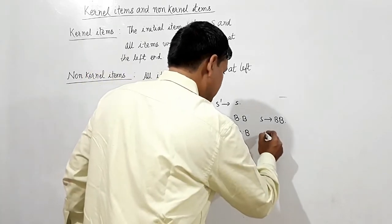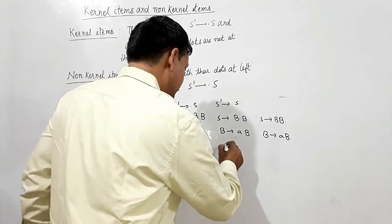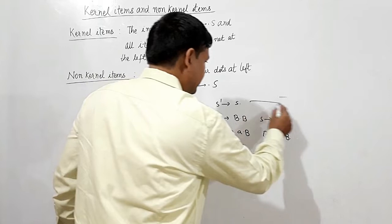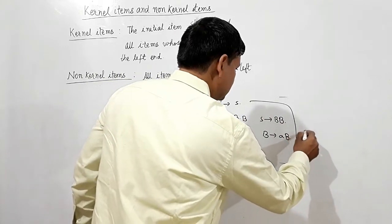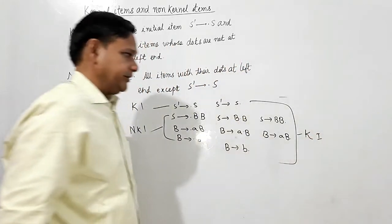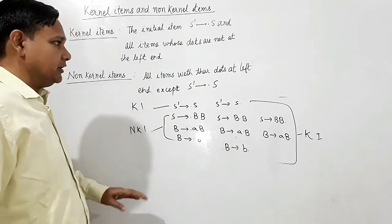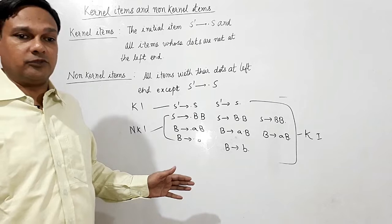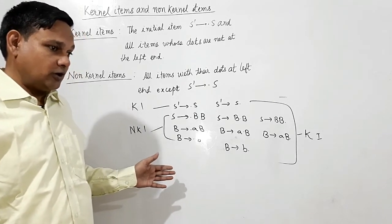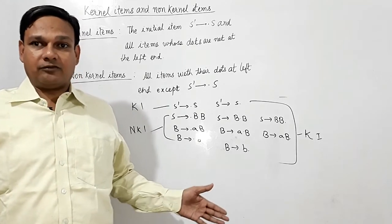If I read B here, B will give aB dot — so this is a kernel item. If I read B here, B gives B dot — these are kernel items. Now I will discuss some grammar here for LR0 and SLR1 parsers.